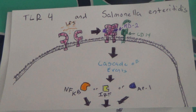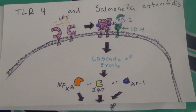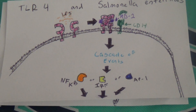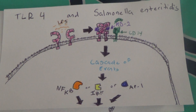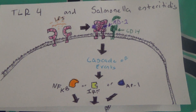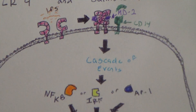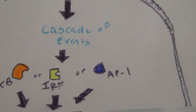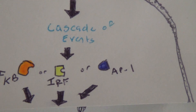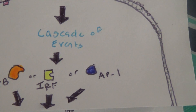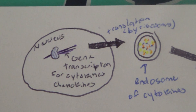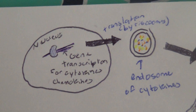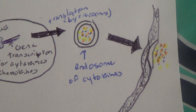When it senses these, two TLR4 receptors will come together and form a dimer. That dimer, along with a protein called MD2 and another protein called CD14, will initiate a cascade of events that will activate transcription factors. These transcription factors will travel to the nucleus, which will then express genes for cytokines that get transported out of the cell to promote the immune response.